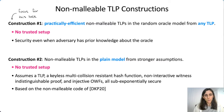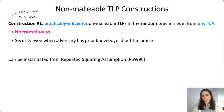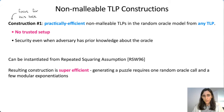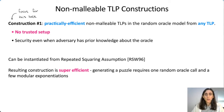In this talk we're mostly going to focus on the first construction. What's really nice is that when you instantiate the underlying time-lock puzzle with the repeated squaring assumption, you get something super efficient. Generating a puzzle in our non-malleable time-lock puzzle requires just one random oracle call and a few modular exponentiations—really efficient, from one assumption and in the random oracle model.